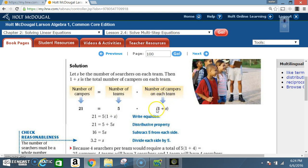And number of campers on each team, we said it's going to be 1 plus s where s stands for the searchers. So we got 21 equals 5 times 1 plus s. We write that equation out: 21 equals 5 times 1 plus s.